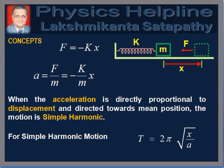Before proceeding to solve the problem, let us recall the related concepts. When a body of mass M connected to a spring of force constant K is displaced from its mean position by a small distance X, then the restoring force acting on it is given by F is equal to minus KX. The negative sign indicates that the restoring force acts in a direction opposite to the displacement of the body.